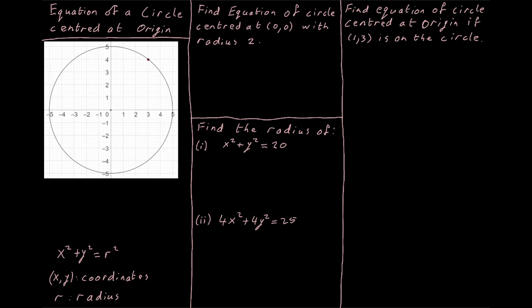The origin is our point (0, 0) at the center of our xy-axis. A circle is an object that has the same distance from a particular point — in this case (0, 0). So the distance from our origin, the center point of our circle, out to our circle is the same all the way around.